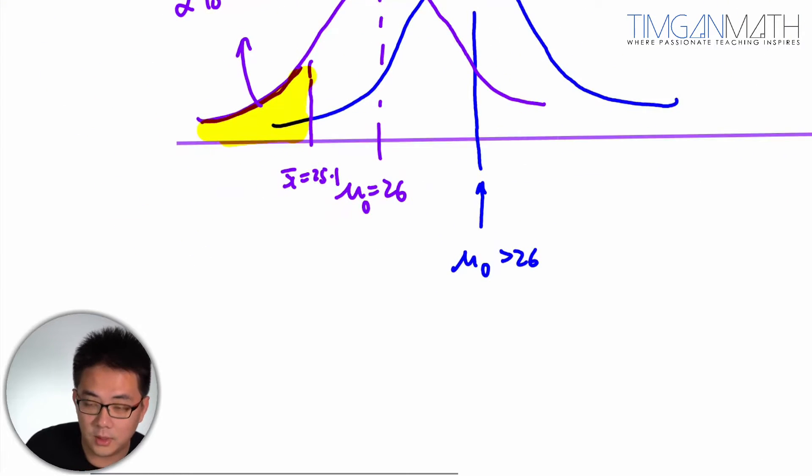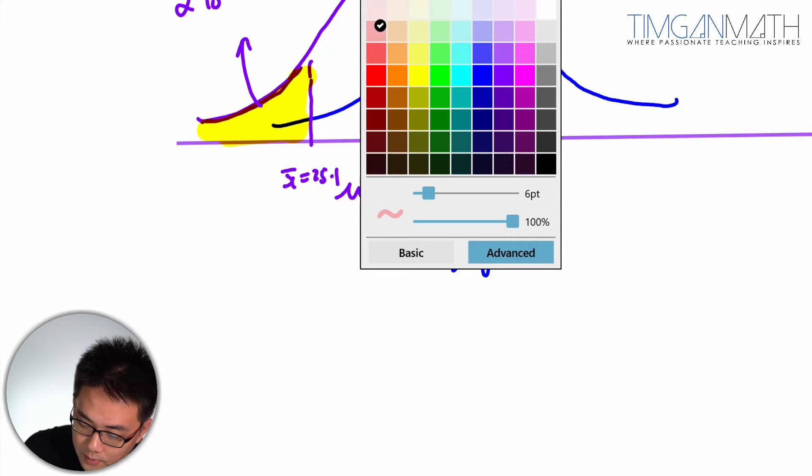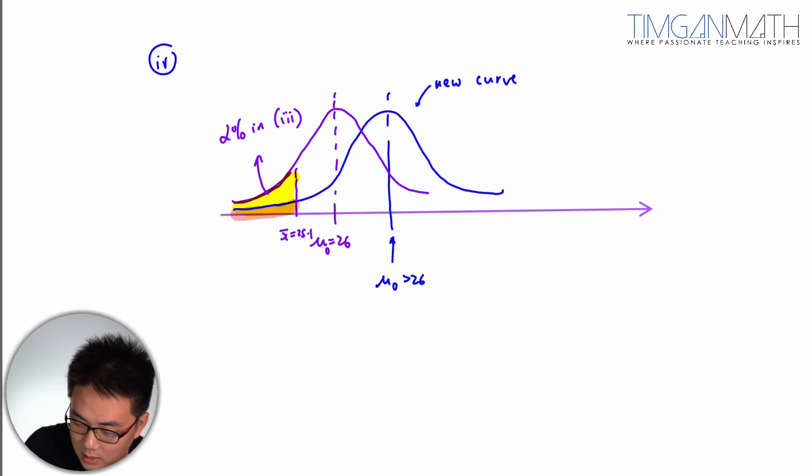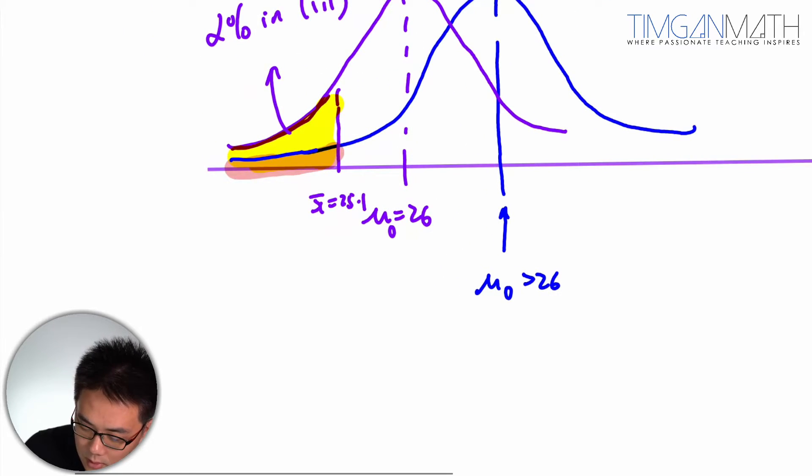But because you draw the same boundary, in other words, now this case here, this small one here, this small case here, would actually be your acceptance region in two. So this is alpha percentage in four.